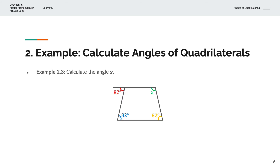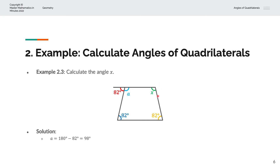In the third example, we're asked to calculate the angle X. We're given a trapezium in this case, and this angle is labeled X, which is what we're trying to find. To do that, we can recognize that this is an angle on a straight line, so we can label this angle as A. The total angle on a straight line sums to 180 degrees. So A equals 180 degrees minus 82 degrees, which gives us A equal to 98 degrees.